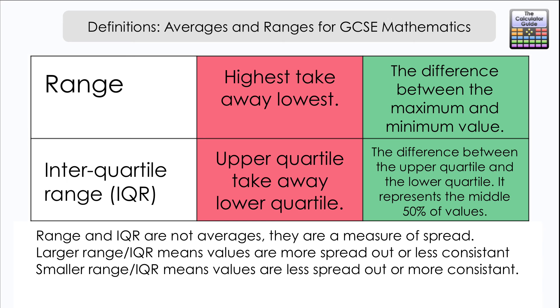Why the interquartile range might be more useful than the range is that it removes any outlying values, any values that are very high or very low which can skew your data.